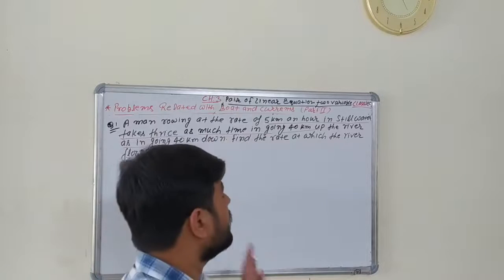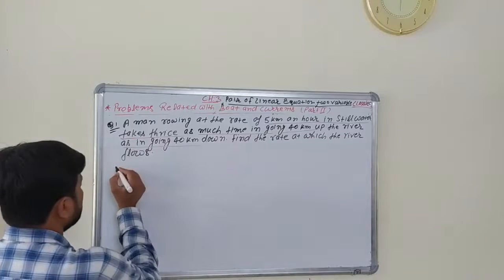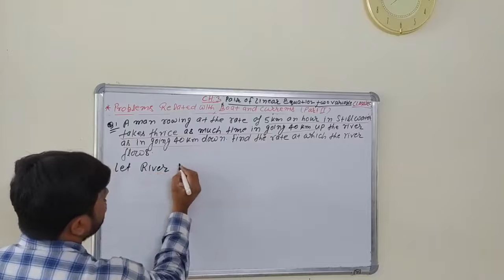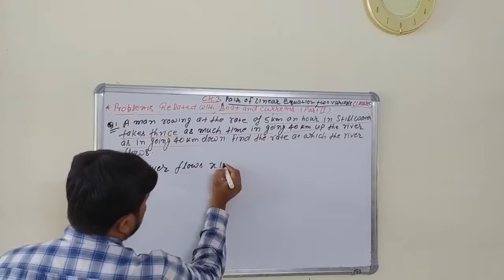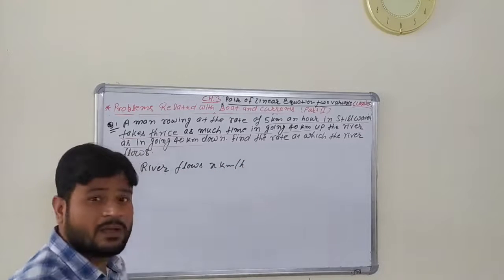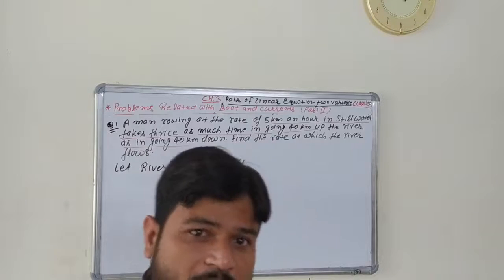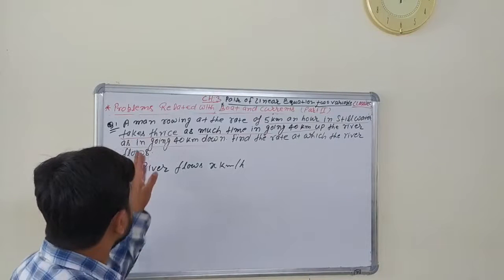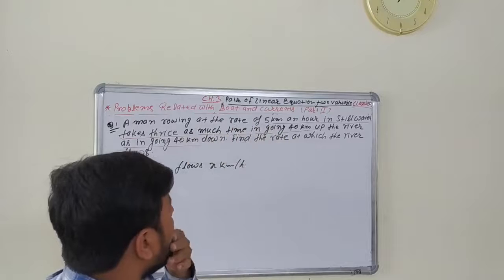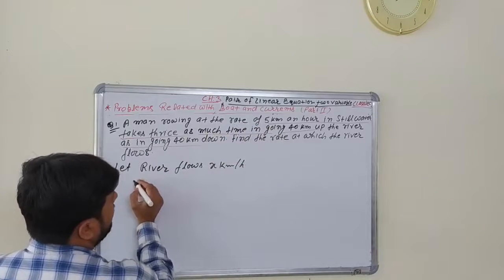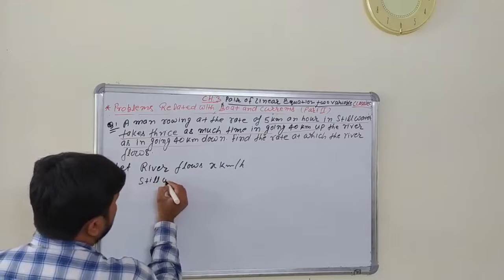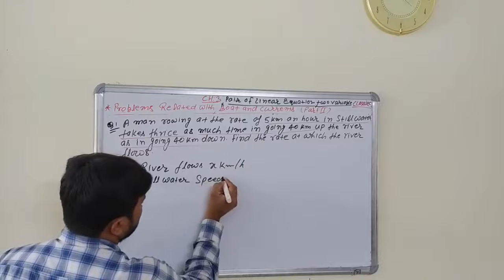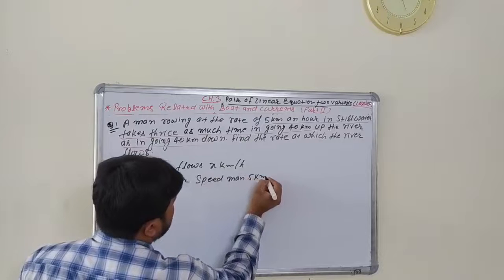This is slightly different from what we did in the last video. Let river flow be x km per hour. River flow means current, so x is the speed of the current. A man rowing at a rate of 5 km per hour in still water — so in still water, the speed of the man is 5 km per hour.